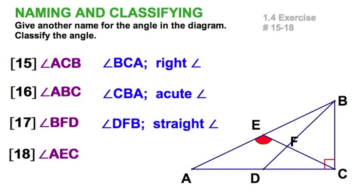And finally, this angle, which we're given as AEC, could also be seen as CEA, and it appears, mind you, to be obtuse. Alright. That's easy enough. Let's move on.